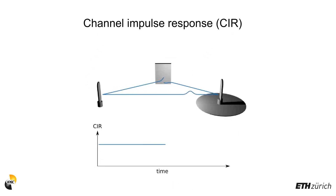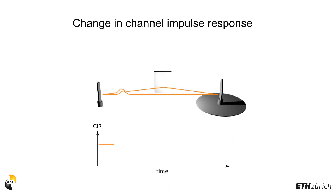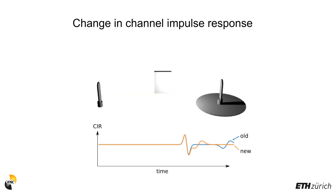When an ultrawide band pulse is emitted by a transmitter, it travels via various paths to the receiver. If there is a change in the surroundings of the transmitter and the receiver, the propagation channel differs and so does the measured channel impulse response.